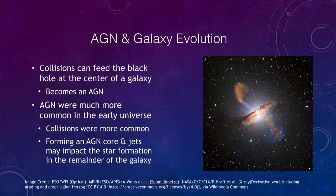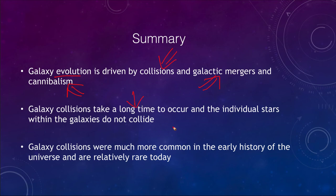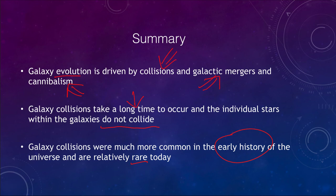To summarize: galaxy evolution is driven by collisions, which lead to either mergers of similar-sized galaxies or cannibalization of smaller galaxies by larger ones. These collisions take a long time and the individual stars do not collide — it is the gas clouds that interact. Galaxy collisions were much more common in the early history of the universe and are relatively rare today. That concludes this lecture on galaxy collisions and mergers. We'll be back again next time for another topic in astronomy — have a great day everyone.